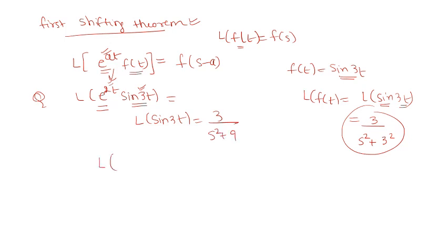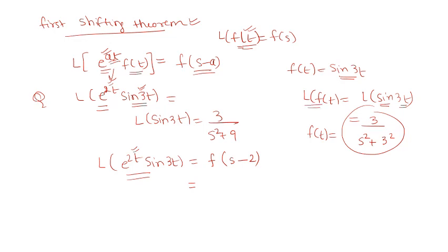Applying the First Shifting Theorem — since e^(2t) is in multiplication — you replace s with s−2 in F(s). So the Laplace of e^(2t) sin(3t) equals 3/((s−2)²+9). This is your answer.